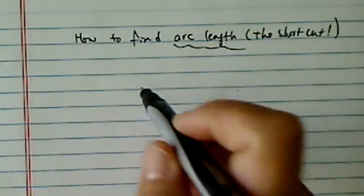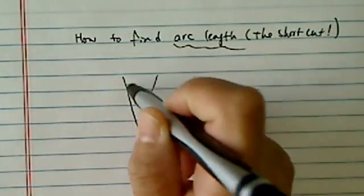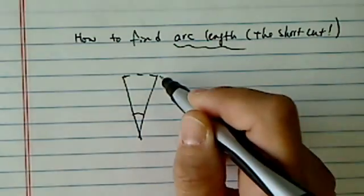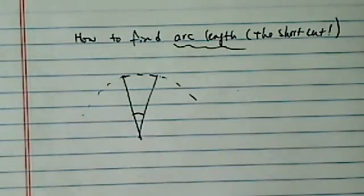Finding arc length always gets students frustrated. There's a whole bunch of formulas and you have to express radius and angles in the radian and so on and so forth. It gets really complicated. Over the years, I helped students find a quicker way. Here's the way.